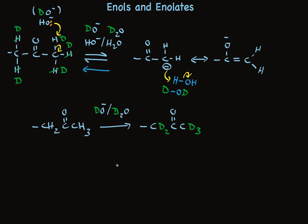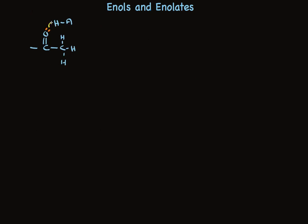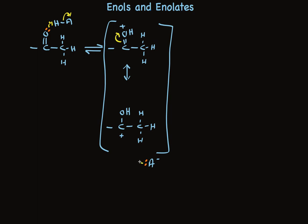There's an acid-catalyzed enol mechanism that makes this happen as well. Take a look. Protonation of the carbonyl, through a reversible process, leads to a compound that has two resonance structures. You picture the pi electrons moving up on oxygen, and the conjugate base of that acid removes the proton to make the enol.